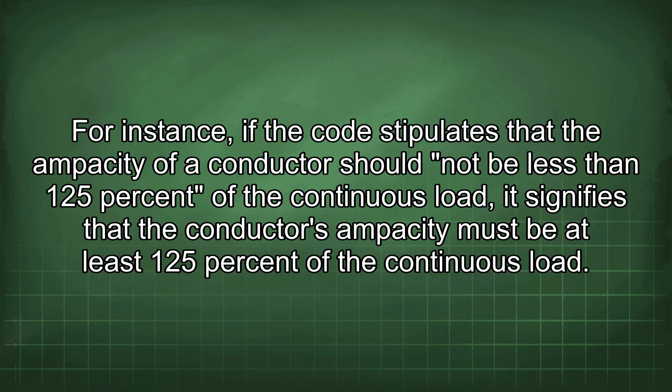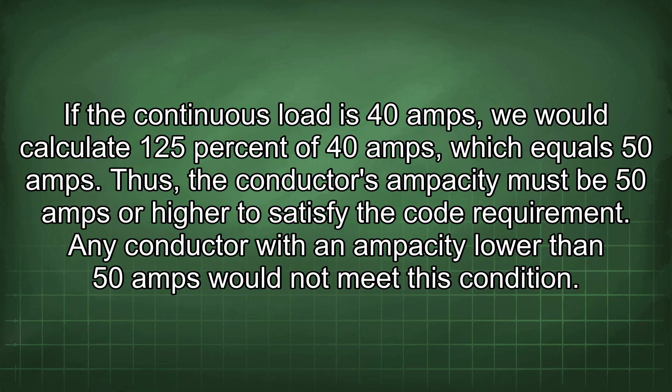For instance, if the code stipulates that the ampacity of a conductor should not be less than 125% of the continuous load, the conductor's ampacity must be at least 125% of the continuous load. If the continuous load is 40 amps, we calculate 125% of 40 amps, which equals 50 amps. Thus, the conductor's ampacity must be 50 amps or higher. Any conductor with an ampacity lower than 50 amps would not meet this condition.